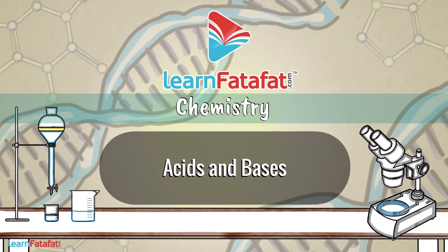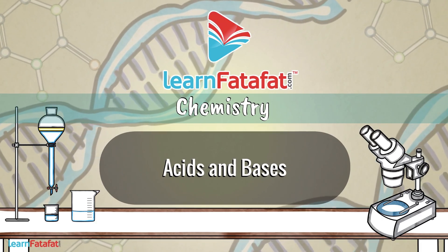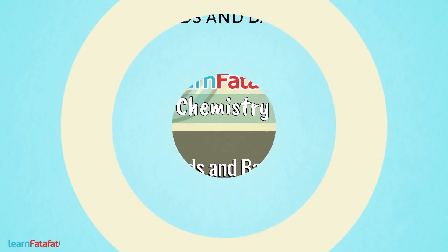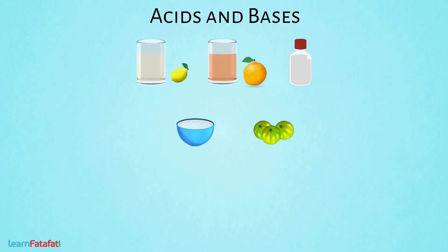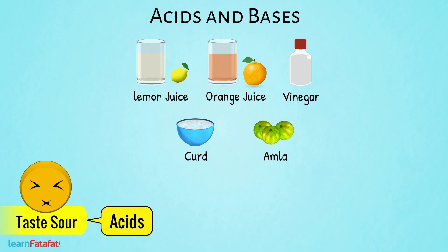Acids and Bases. There are some substances which taste sour — such substances are acids. For example, lemon juice, orange juice, vinegar, curd, amla, etc.